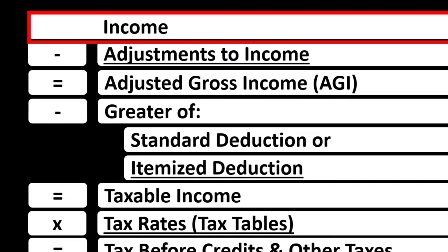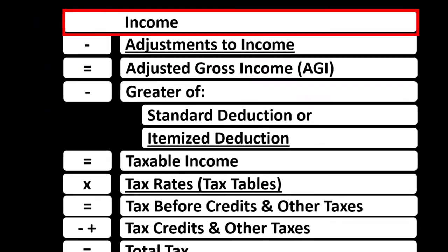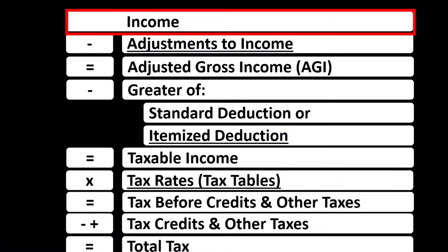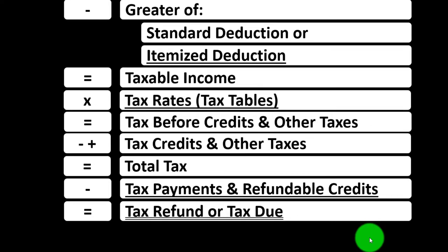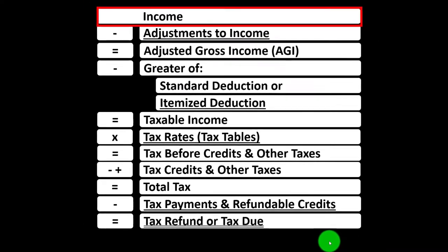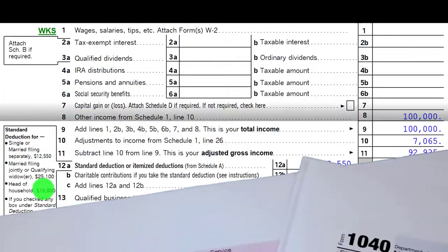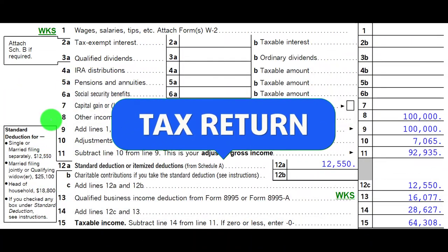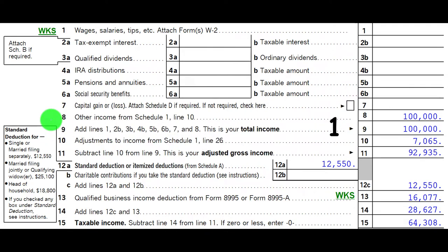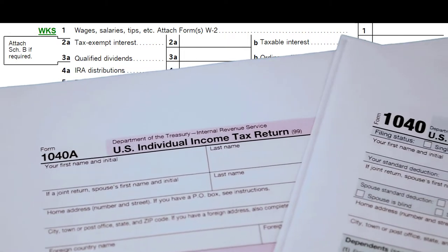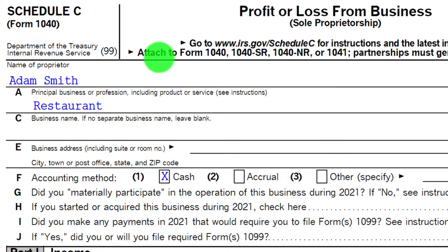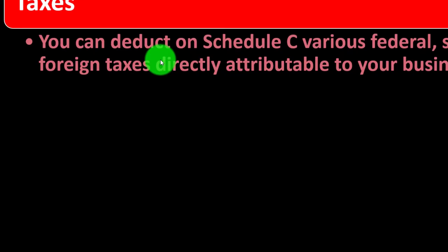The income tax formula has line one income, which includes a subschedule — basically an income statement with income and expenses. We're focusing on the expense side. The net rolls into line one of the income tax formula, and on the form 1040, the Schedule C bottom line rolls into Schedule 1, which rolls into page one of form 1040 at line eight. Schedule C is the profit or loss from business — basically an income statement.